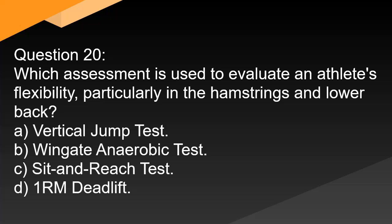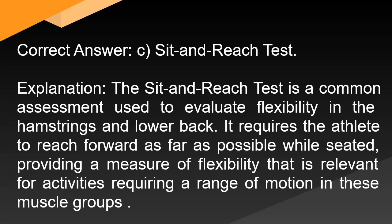Question 20: Which assessment is used to evaluate an athlete's flexibility, particularly in the hamstrings and lower back? A. Vertical jump test. B. Wingate anaerobic test. C. Sit and reach test. D. 1RM deadlift. Correct answer: C. Sit and reach test. The sit and reach test is a common assessment used to evaluate flexibility in the hamstrings and lower back. It requires the athlete to reach forward as far as possible while seated, providing a measure of flexibility that is relevant for activities requiring a range of motion in these muscle groups.